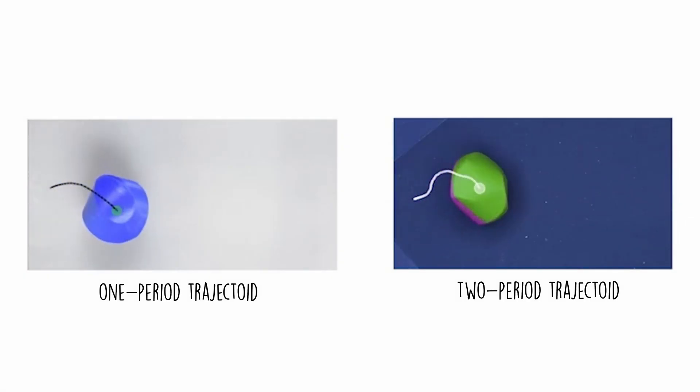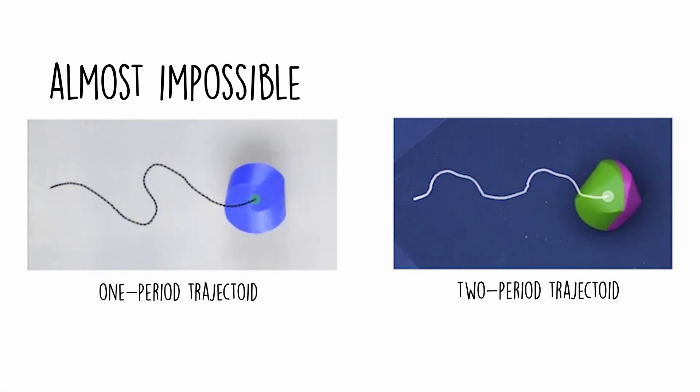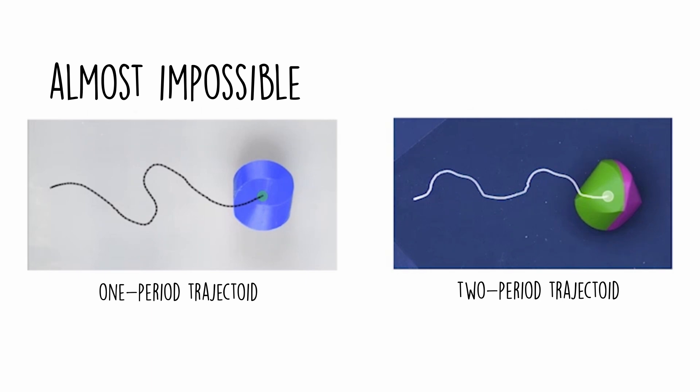Trajectoid mathematicians found that while it's almost impossible to stumble across a one period trajectoid that fulfills our mathematical conditions, for a two period trajectoid, it's surprisingly easy. The reason why it's so easy to make a two period trajectoid boils down to some fascinating geometry.